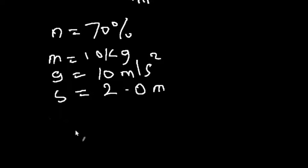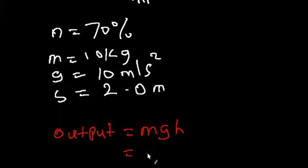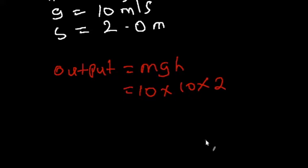So before we proceed, let us calculate our output. Our output is equal to the mass times gravity times height, which will be 10 times 10 times 2. And that is equal to 200 joules.